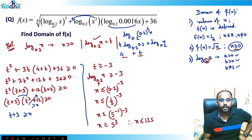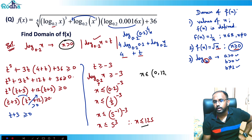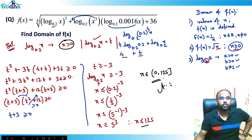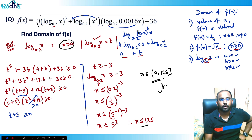So the final answer: x must be positive and x ≤ 125, which means x belongs to (0, 125]. That is the domain — 0 is not included but 125 is included. This is a very good question combining several concepts.